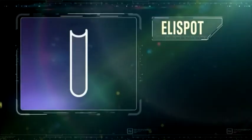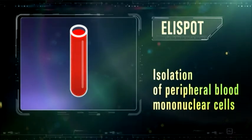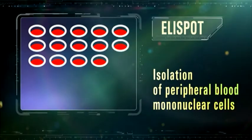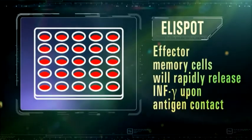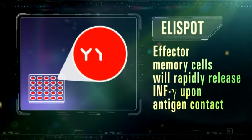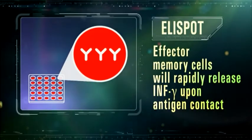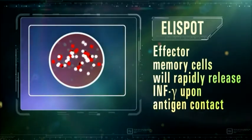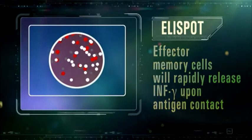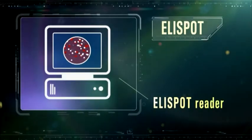System ELISPOT, T-SPOT.TB, evaluates visually or with devices the number of stained zones, i.e., sensibilized peripheral T cells which release interferon gamma after incubation with recombinant protein CFP10, ESAT6.